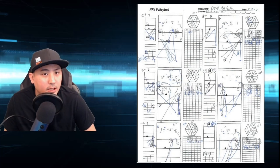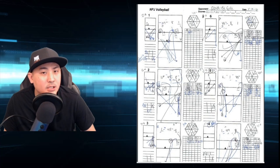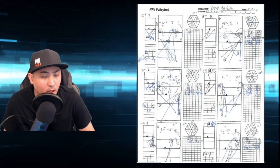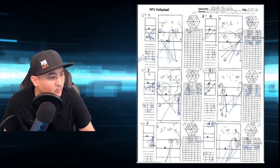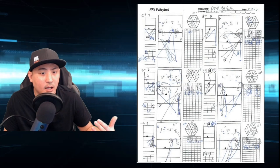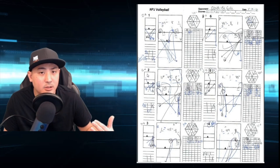Next to each of their rotations, I'll write the number of the rotation that we want to be in when we're serving. So in this example, against their rotation one, we want to be serving in two. Against their rotation two, we want to be serving in three. And from there it's just going to run in rotational order — four, five, six, and one — and then we're back to two again.